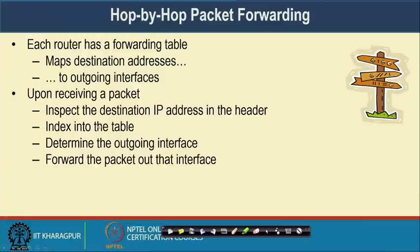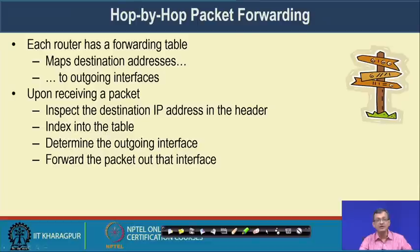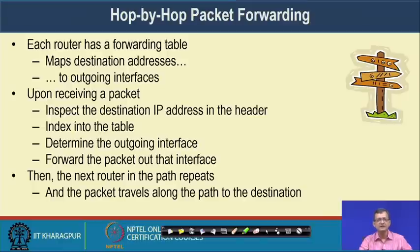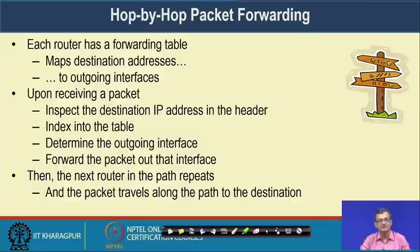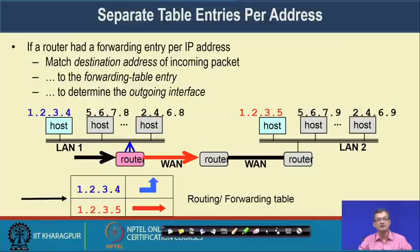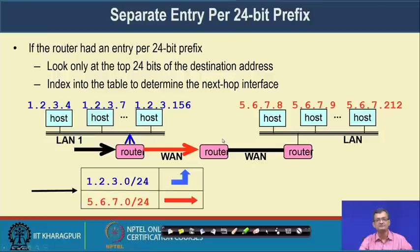Upon receiving a packet, the router inspects the destination IP address in the header, indexes into the table, determines the outgoing interface, and forwards the packet. In some situations it can update the header. The next router in the path repeats the process — it goes on hopping hop by hop. The router forwards based on IP prefix match in the destination, using the forwarding table entry to determine the outgoing interface.